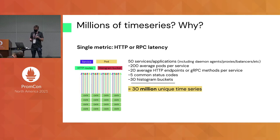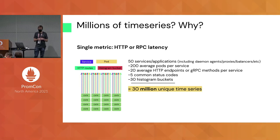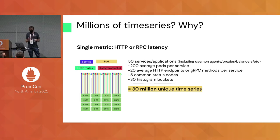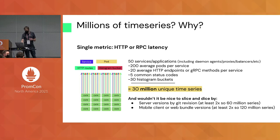Talking about a single metric, we'll find very quickly that just measuring HTTP or gRPC traffic can become quite high cardinality very quickly. We're talking about 50 microservices, 200 average pods per service — and that seems large, but even pegging one of those numbers down, you're still in a very high cardinality world. Each service might have 20 average HTTP endpoints or gRPC methods, five common status codes, and 30 histogram buckets. You quickly get to 30 million unique time series, which is insane.